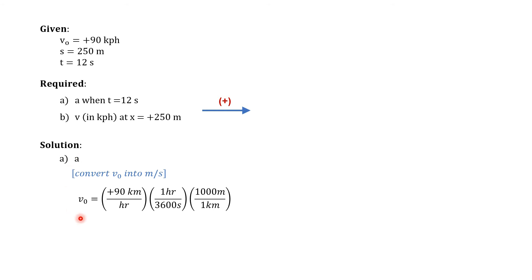So our initial velocity is 90 kph. We'll just multiply the conversion factors to cancel this unit of hour and kilometer. So this will give us an initial velocity of positive 25 meters per second. So now all the values are in basic units.